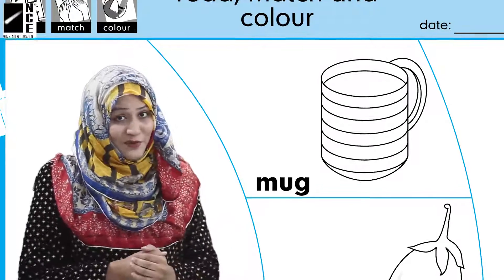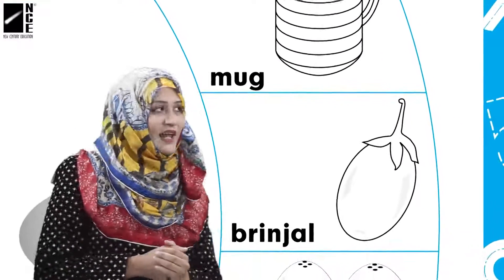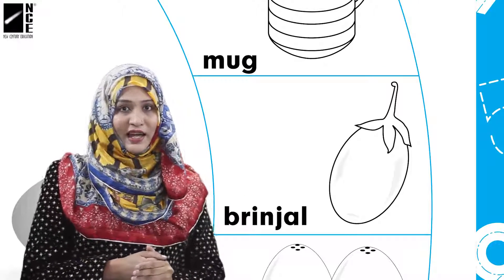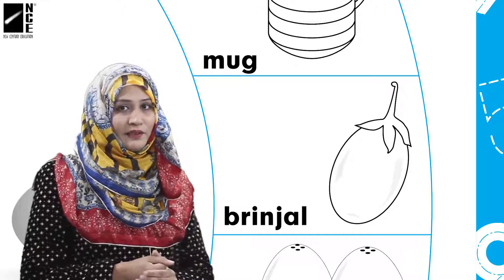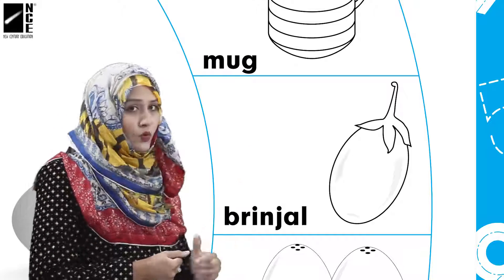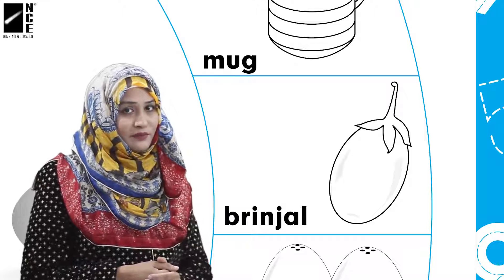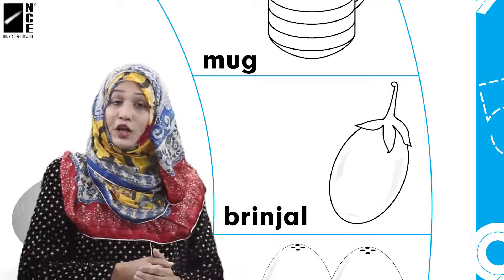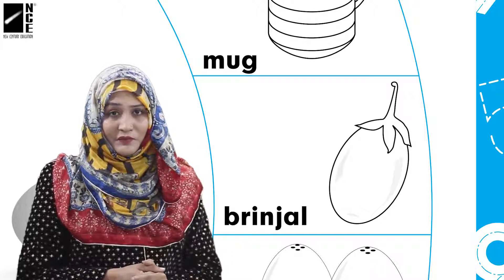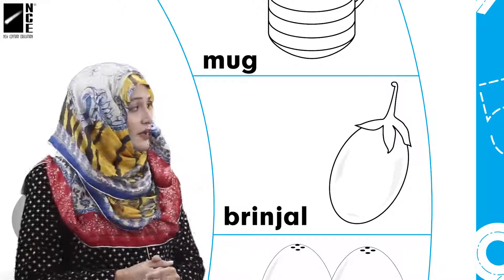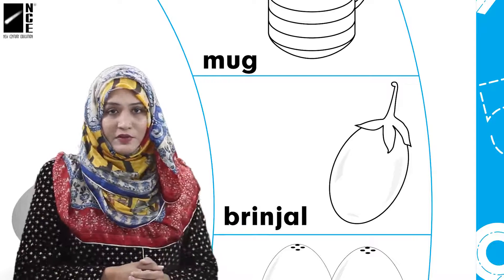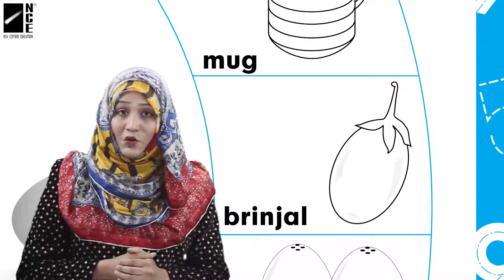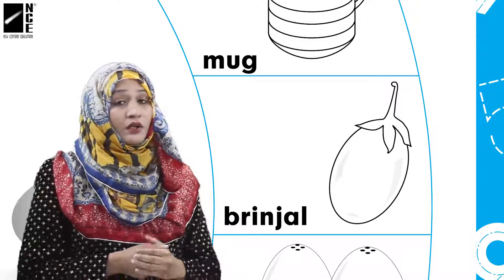Here we have another picture — the second picture is a brinjal. You can see — can you tell me? The shape of this brinjal is oval. Yes, the shape of this brinjal is oval. So what will we do, children? We will match this shape — this shape is oval — match it.